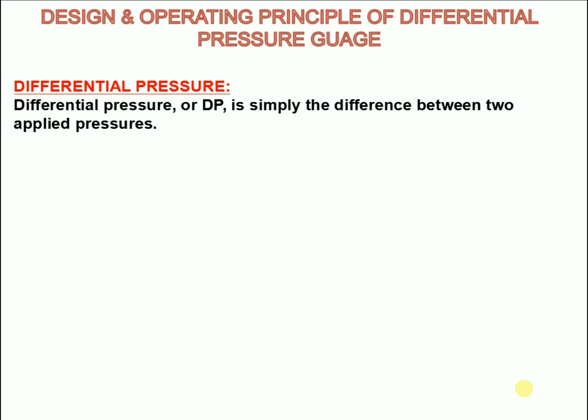For example, if the pressure at point A equals 100 psi and the pressure at point B equals 60 psi, then the differential pressure is 40 psi — that is, 100 psi minus 60 psi.